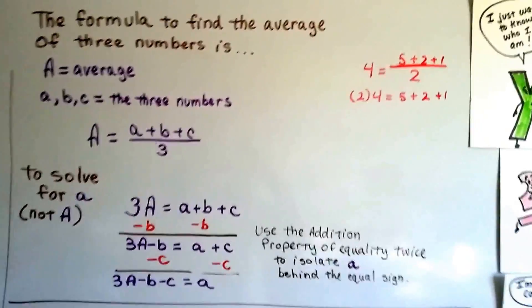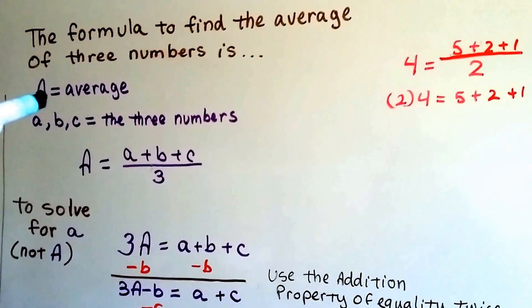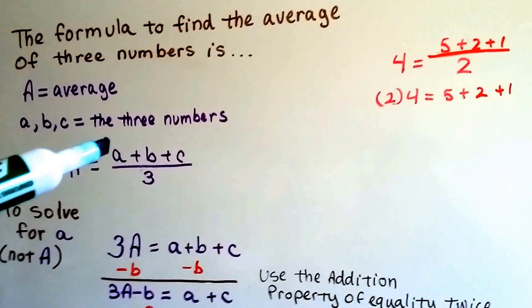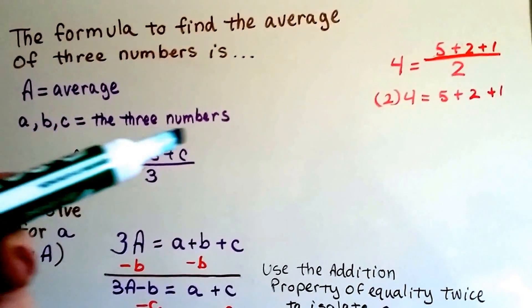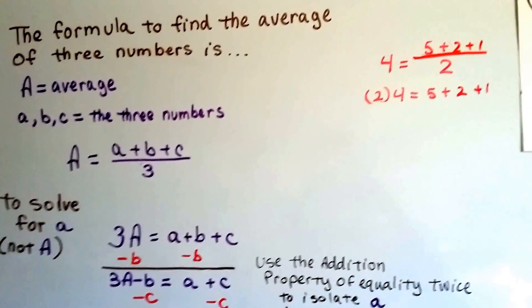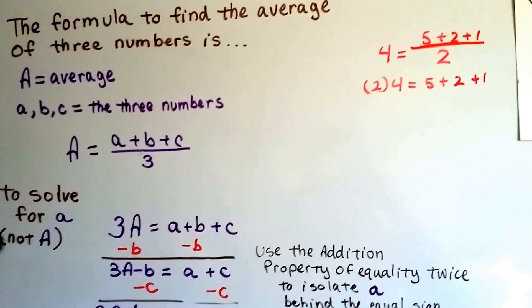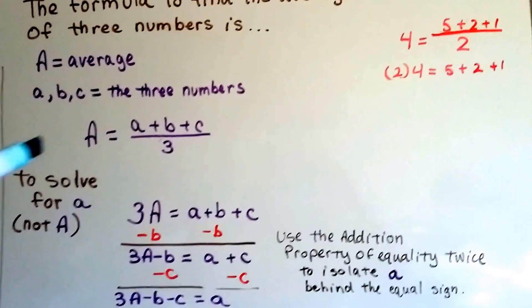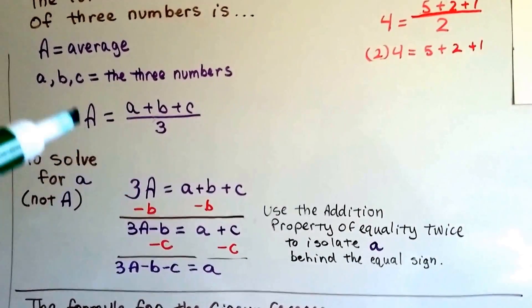We can do this for other formulas too. The formula to find the average of 3 numbers is a capital A for average, a plus b plus c, to represent the 3 numbers. If you want to find the average for 10 numbers, you add up the 10 numbers and divide it by 10. If you want to find the average for 20 numbers, you add up the 20 numbers and divide it by 20. So all we have to do is move this 3 over to the front of the A.